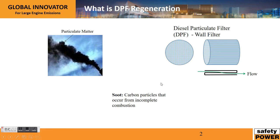What happens is you have your flow with particulate matter in it, and basically the end of the channel is capped off so it can't flow straight through — it's forced through the filter medium. That filter medium captures the particulate matter and allows the rest of the flow to pass through. Now, after a number of hours of engine operation, you're going to get a lot of soot buildup in that filter, which will increase the back pressure. So we need a way of removing that soot, and that is the regeneration process.